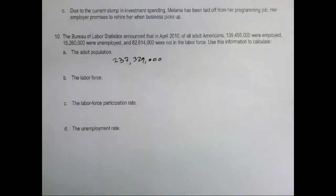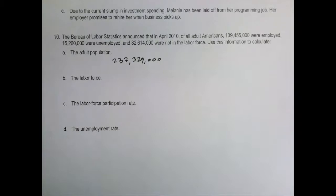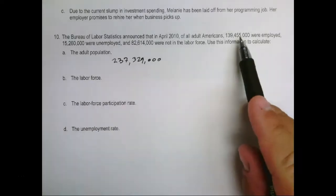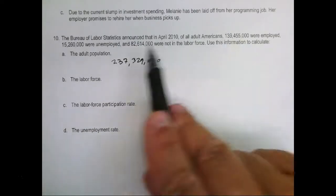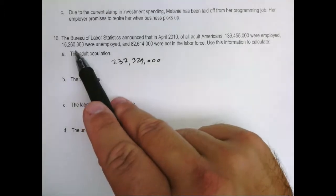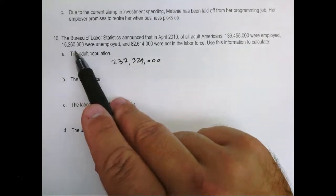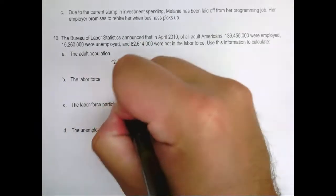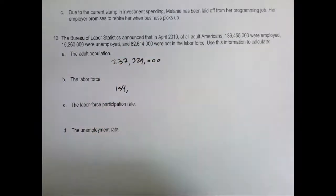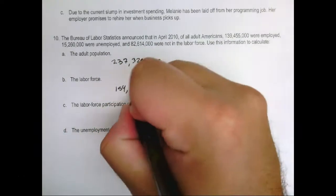This portion of the question is asking us to calculate labor force. The labor force looks at the total number of people who are actually participating in either having a job or looking for a job. So we would take the number of people who are employed and add to that the number of people who are unemployed but looking for work. When we add those two numbers together, we're going to get 154,715,000.